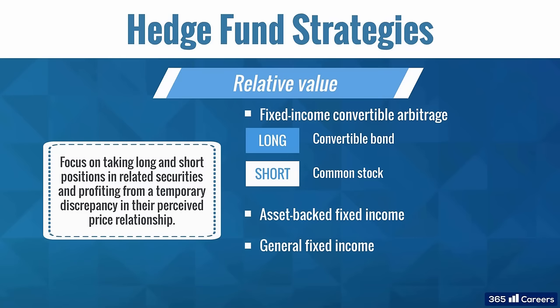General fixed income strategies exploit various pricing discrepancies within fixed income markets, including relative value positions between two different companies or between various securities of the same company. We also have volatility strategies, which typically use various derivative financial instruments to go long or short on market volatility in a single asset class or across different classes. Multi-strategy funds deploy various existing strategies to use relative value opportunities across asset classes.